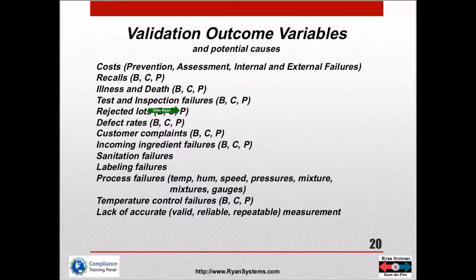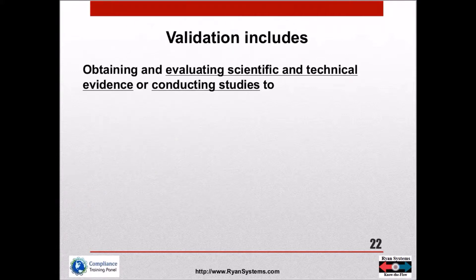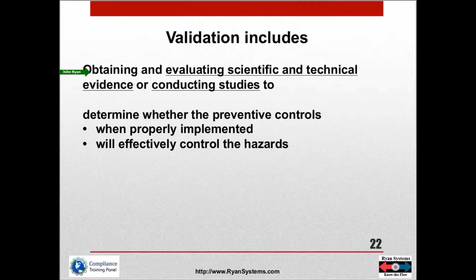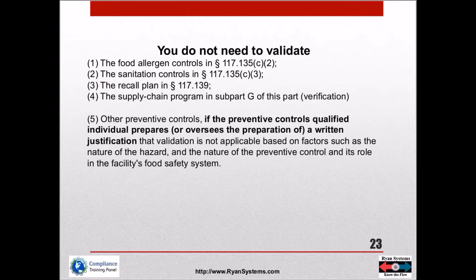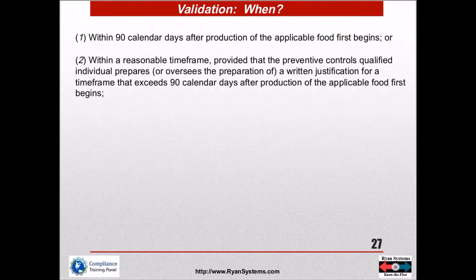There's just a bunch of problems when it comes to your ability to get a valid process under control. Obtaining and evaluating scientific and technical evidence, or conducting studies, determines whether preventive controls when properly implemented will effectively control the hazard. According to the rules, you're supposed to have validated your plan within 90 days after production of the food has first begun, or within a reasonable time frame.